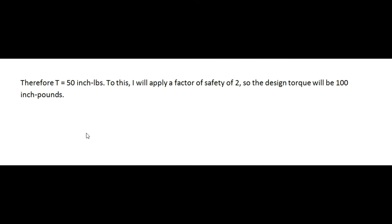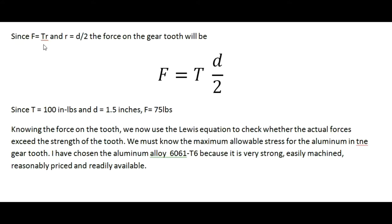We've calculated that the torque in the system will be equal to 50 inch-pounds. For the sake of being conservative, I'm going to apply a factor of safety of 2 and adopt a design torque of 100 inch-pounds. Force is equal to torque divided by radius, and radius equals diameter divided by 2. We can calculate the force on the gear tooth as force equals torque times 2 divided by diameter. Since the design torque is 100 inch-pounds and the pitch diameter is 1.5 inches, we can calculate the force F to be 75 pounds.